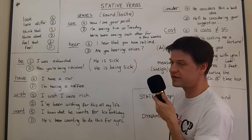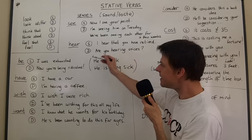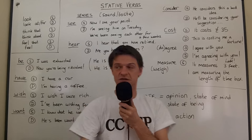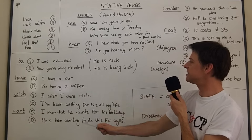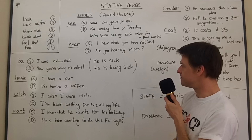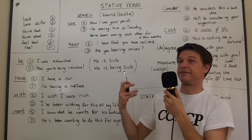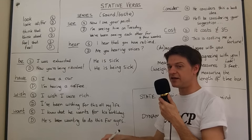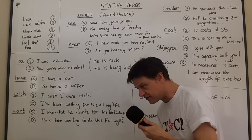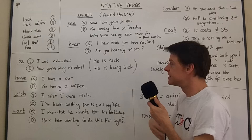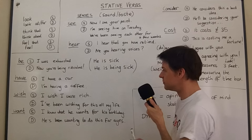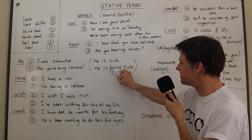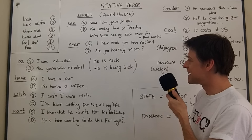The same applies with 'sound' and 'taste,' which I don't have time to cover today. Now let's look at 'be.' 'He is sick' versus 'he is being sick' — very different meanings. 'He is sick' just means he is ill; this is his state of being. But 'he is being sick' refers to the action — it actually means he's vomiting. So the stative and dynamic forms of 'be' have very different meanings.